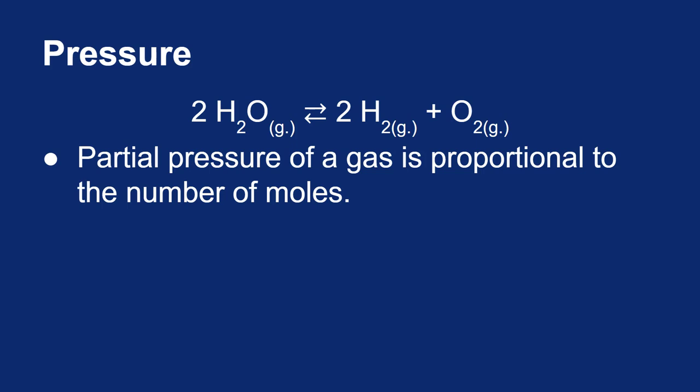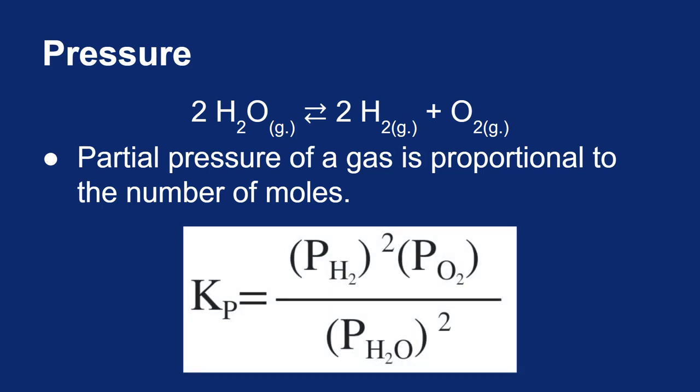So when dealing with gases, you can actually write an equilibrium expression in terms of pressure instead of concentration. For this reaction, it will look like this. We would say the equilibrium constant equals the partial pressure of hydrogen squared times the pressure of oxygen divided by the pressure of water squared. We do the same format, products over reactants, and the exponents come from the coefficients in the balanced equation.